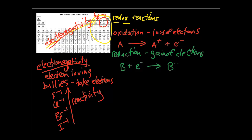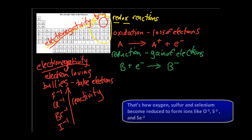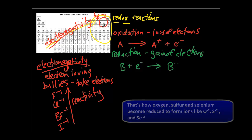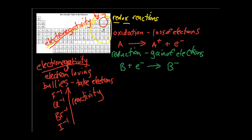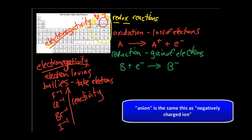As for the group sixes, they're going to act in a similar way, except the charges on these elements are not going to be negative one. They need two electrons to make the octet, so they're all going to be negative two. Oxygen is going to have a negative two charge, sulfur is going to have a negative two charge, selenium is going to have a negative two charge, and so on. Nine times out of ten, these guys are going to be bullies too, taking two electrons to complete the octet and create a negative two anion.